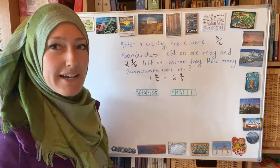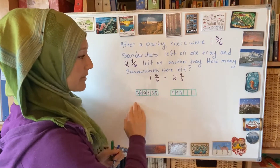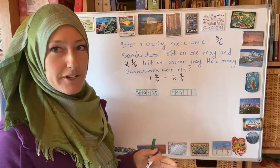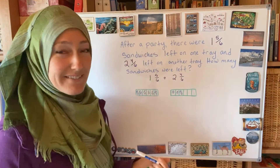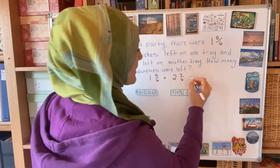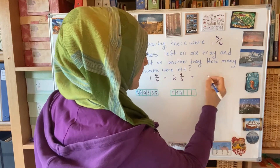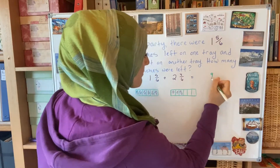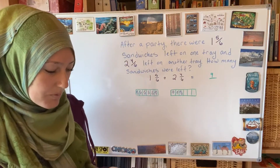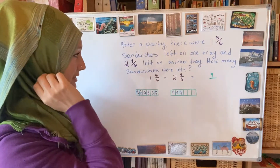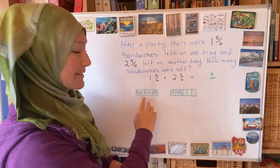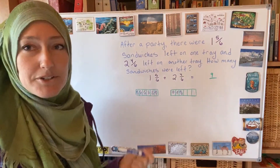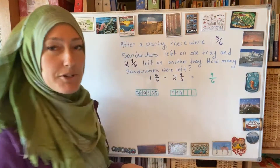Now I can see how many total parts are shaded — there are 9 total shaded parts. And if you look at the math, 5 plus 4 is 9. So we're going to have 9 parts for the fraction. My denominator is going to stay 6, because my part is a 6-sized part. So now my fraction part is done.